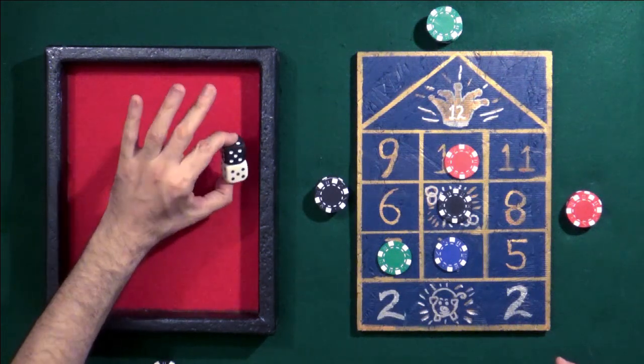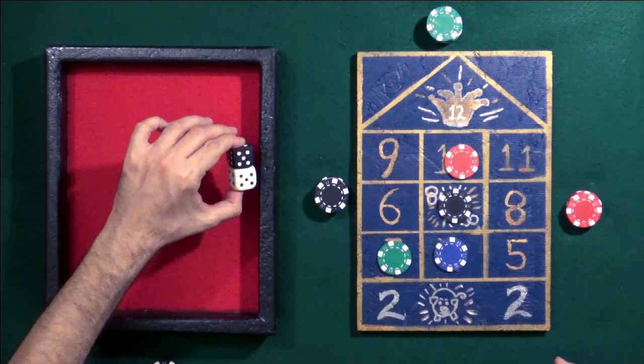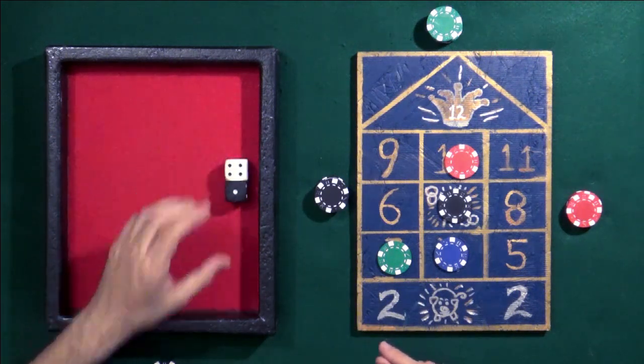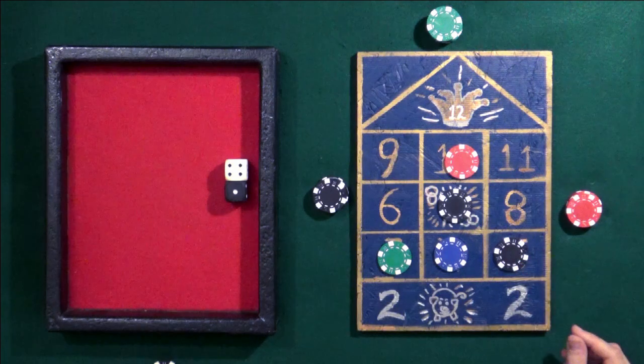You can make a variation where if you roll doubles you go again, but we're not going to play with that variation. We're just going to go back to black. Black rolled a five, so black places a chip on five.